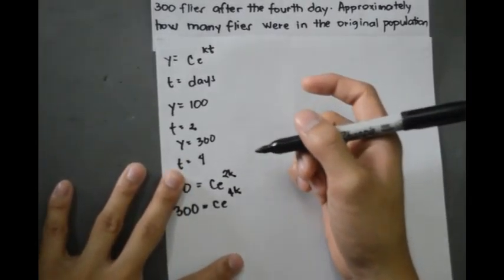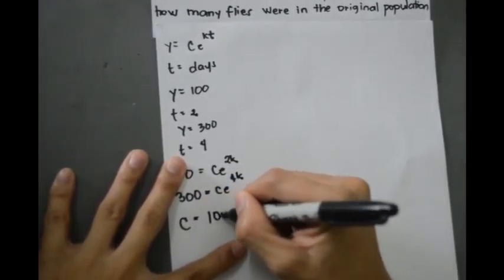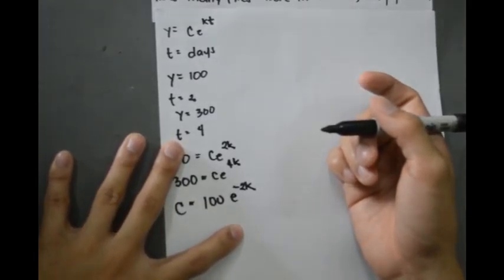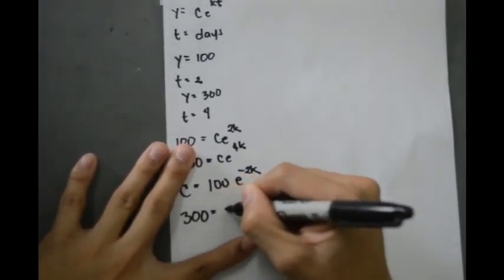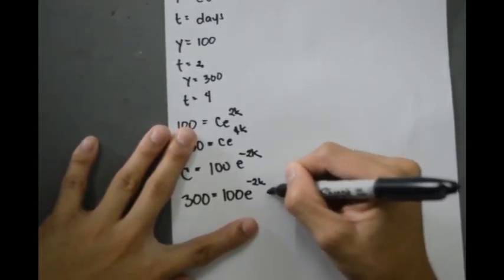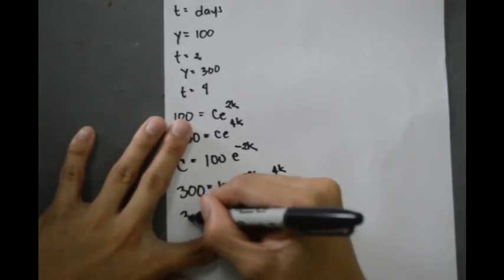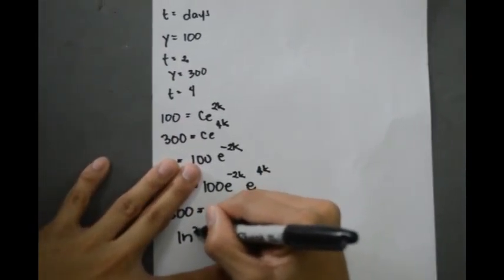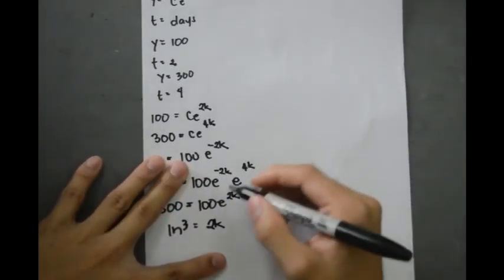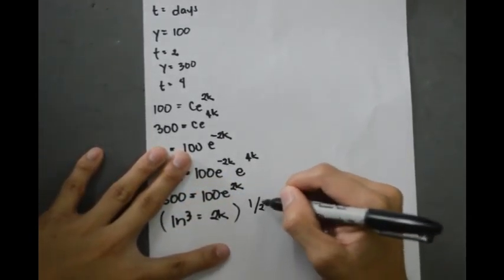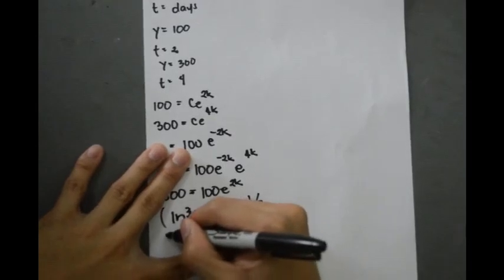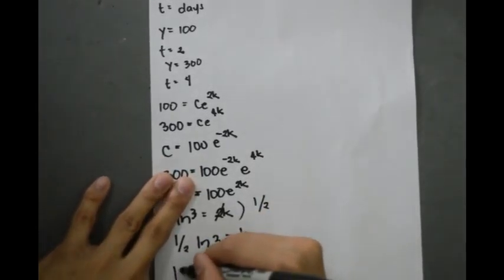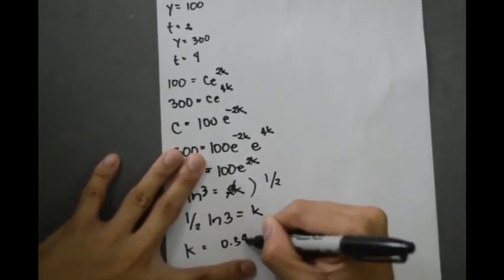From the first equation, c equals 100 times e raised to negative 2k. Substituting into the second equation: 300 equals 100 e raised to negative 2k times e raised to 4k, which simplifies to 300 equals 100 e raised to 2k, so ln of 3 equals 2k. Multiplying both sides by one half gives k equals one half ln of 3, which is equivalent to k equals 0.5493.